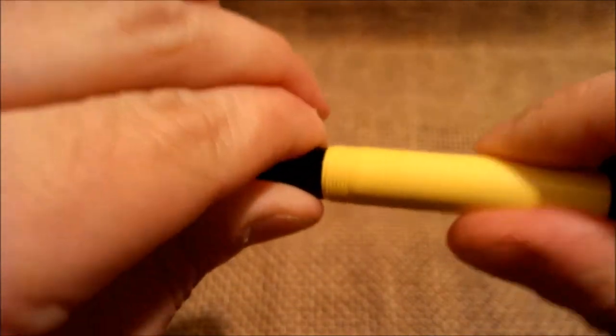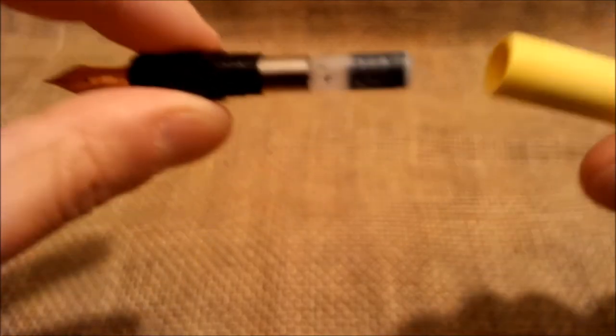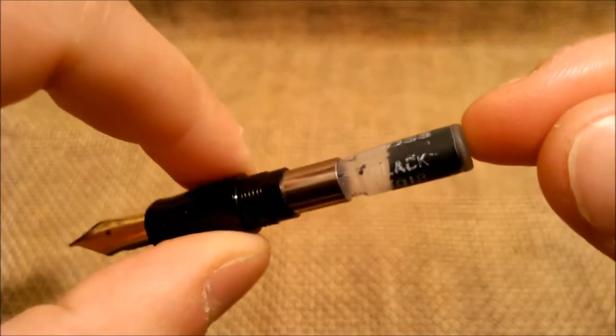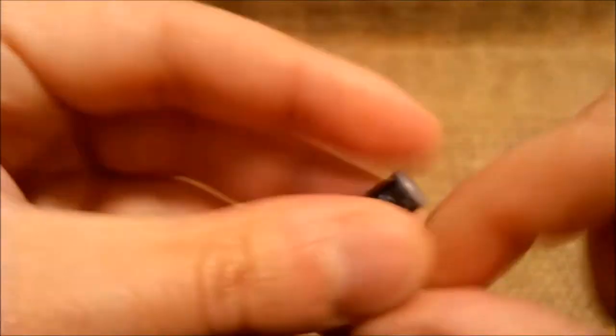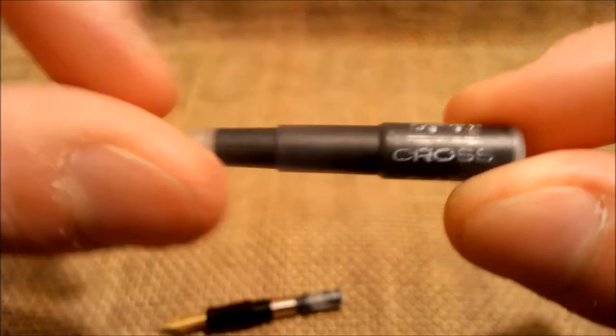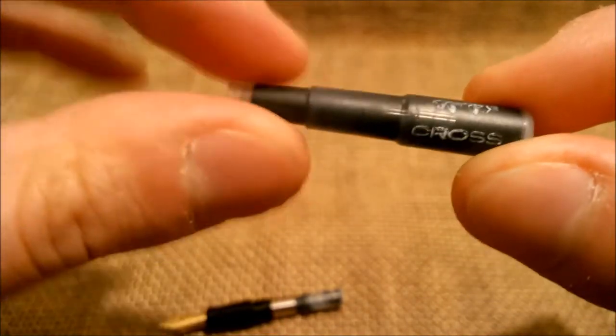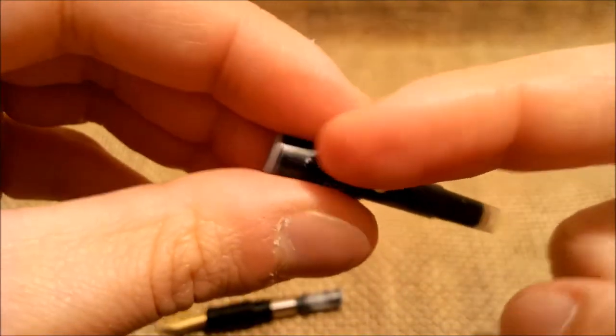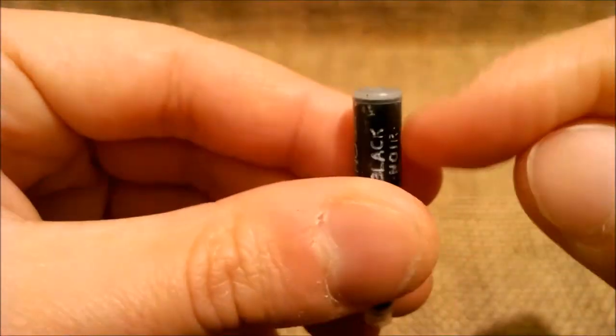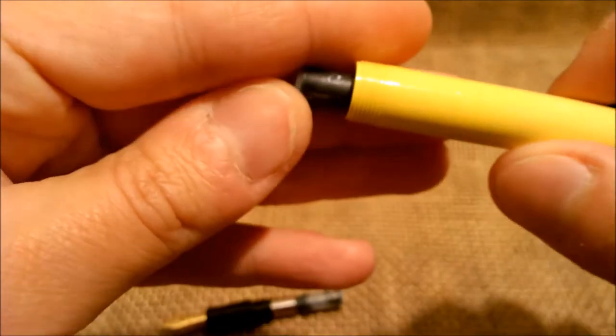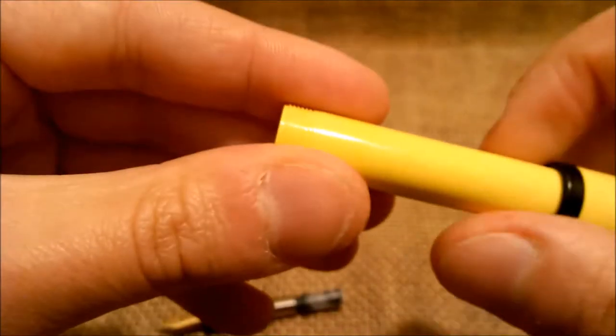So the section unscrews and it takes the proprietary Cross cartridges or the converter. Here you can see the Cross cartridges are like this. They have these two steps and they are pretty good. They don't fall off the pen and they usually run all the ink out of the pen. There is no residue here as it happens in some Parker cartridges, for example.